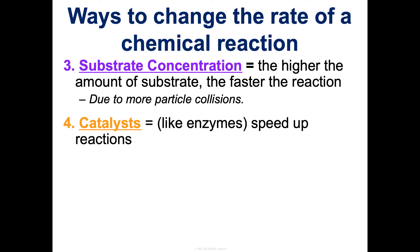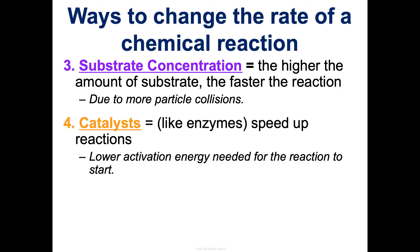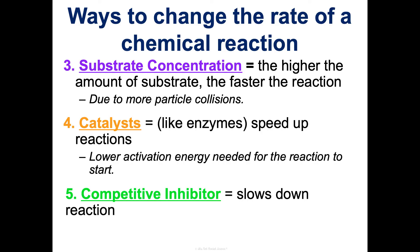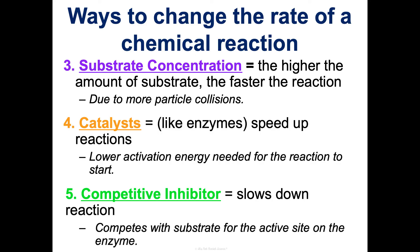Fourth, catalysts like enzymes speed up reactions by lowering the activation energy needed to get them started — that plays a huge role. Fifth, competitive inhibitors: these can slow down a reaction by competing with the substrate for the active site. Only certain things can fit in that spot, and a competitive inhibitor can get in the way. There are also non-competitive inhibitors and allosteric regulation, and this type of inhibition can be reversible or irreversible. I'll get into more detail on those with AP bio students, but I just want to introduce you to some of the factors that can affect the rate of a chemical reaction.